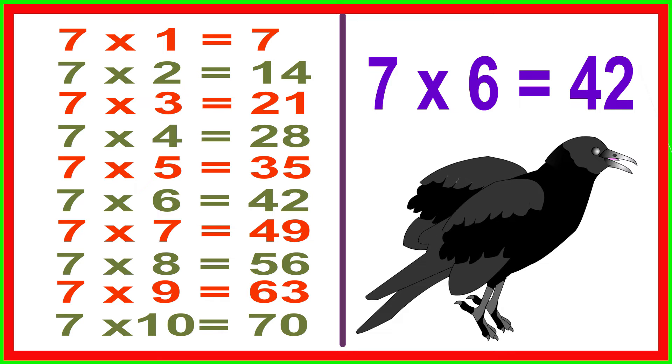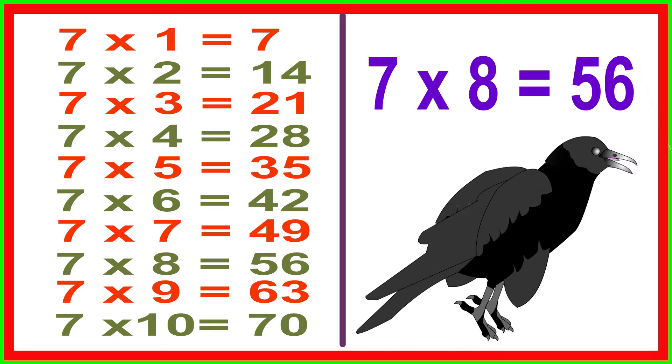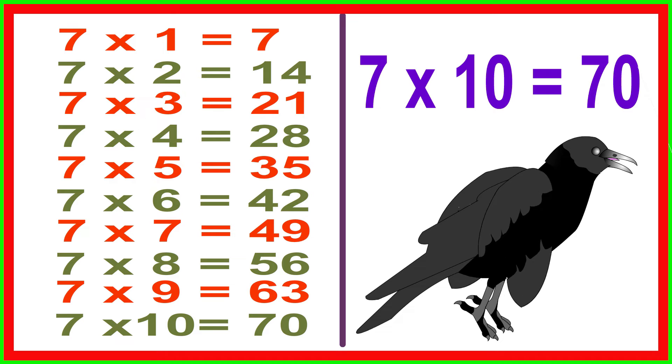7 times 6 equals 42, 7 times 7 equals 49, 7 times 8 equals 56, 7 times 9 equals 63, 7 times 10 equals 70.